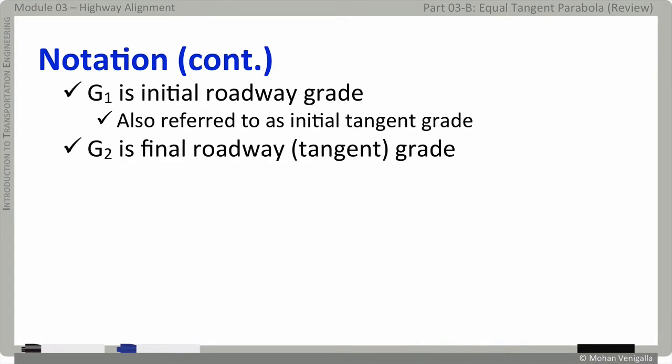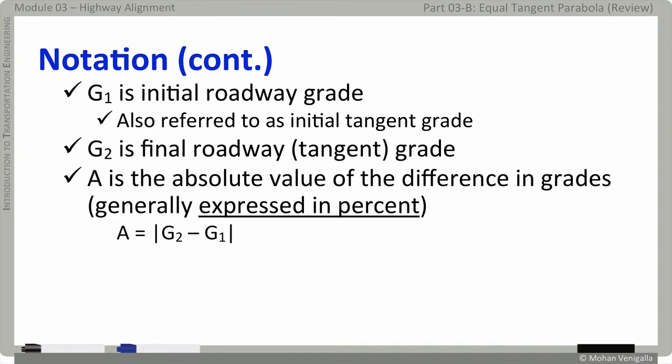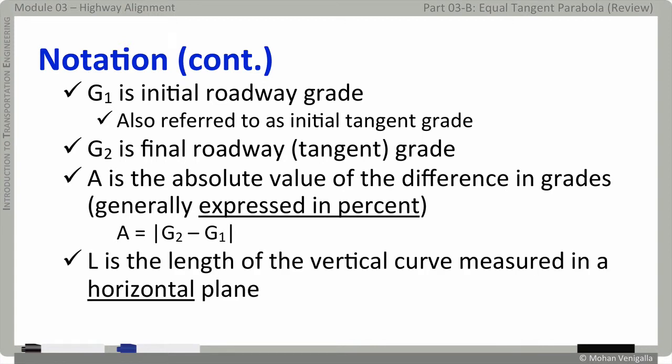G1 is initial roadway grade, also referred to as initial tangent grade. G2 is final roadway grade, or final tangent grade. A is the absolute value of the difference in grades, generally expressed in percent. If G1 is 2% plus, and G2 is minus 2, the absolute value will be minus 2 minus 2, that will be 4, in percent. L is the length of the vertical curve measured in a horizontal plane. In other words, it is a straight line distance not along the curve.